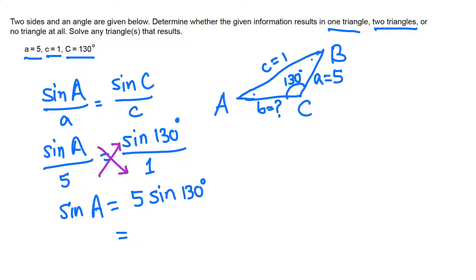Let's use our calculator. Make sure the mode in the calculator is in degrees. 5 times sine 130° gives sine A. Note that the sine A value should be between negative 1 and 1. It should not be bigger than 1 or less than negative 1.